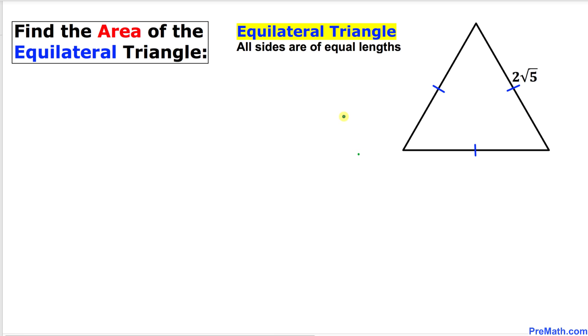In this video tutorial we are going to find the area of this given equilateral triangle whose side length is 2 times square root of 5.